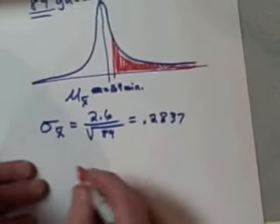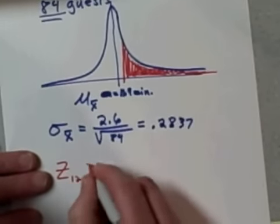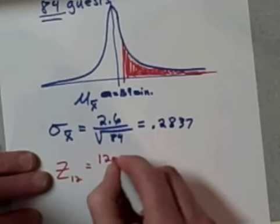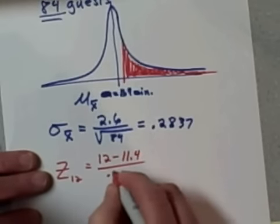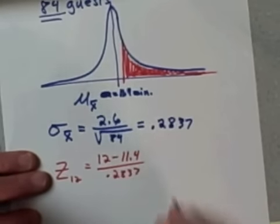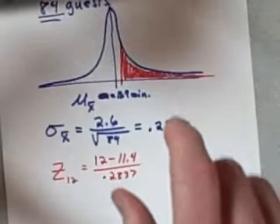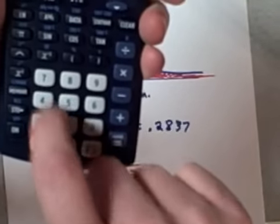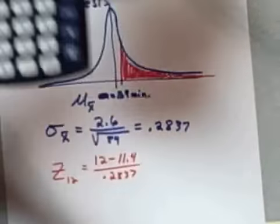First of all, my z-score for 12 is going to be equal to 12 minus the mean of 11.4, but divided by 0.2837 this time—my new standard deviation. So using a calculator, 12 minus 11.4 is equal to 0.6, but I'm dividing it by 0.2837, and that equals...